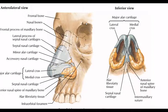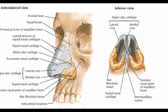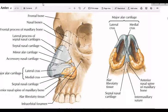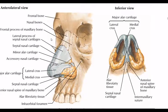In the mucous gland, dust and particles are trapped. In this way, the nose works like an air conditioner — it cleans the air before it reaches the lungs. The olfactory mucous gland is located in the upper one third of the nasal cavity.